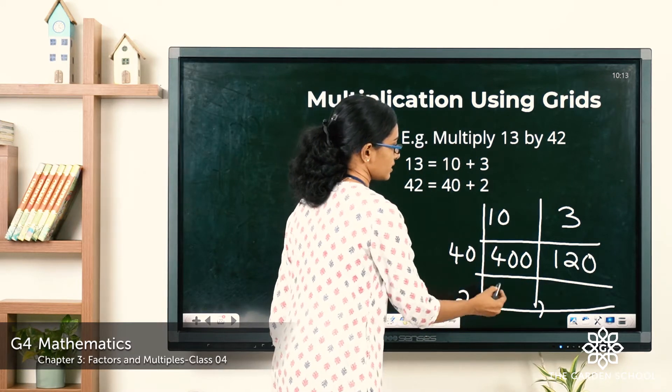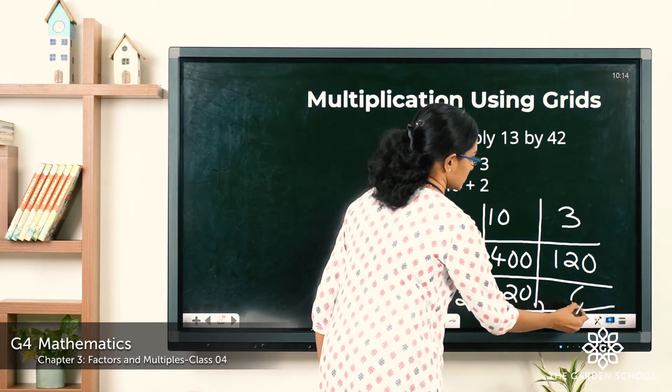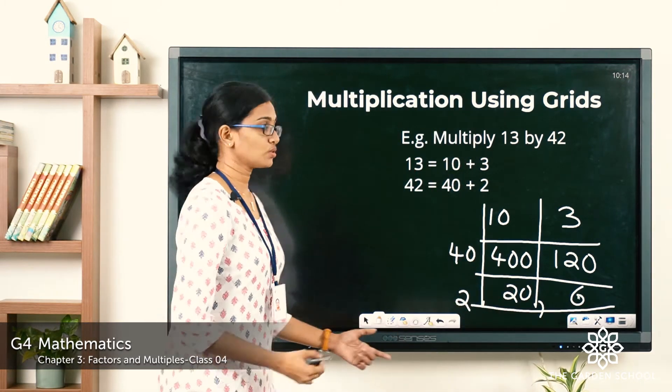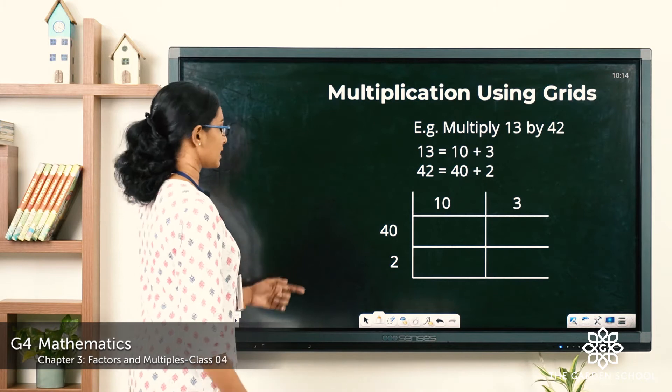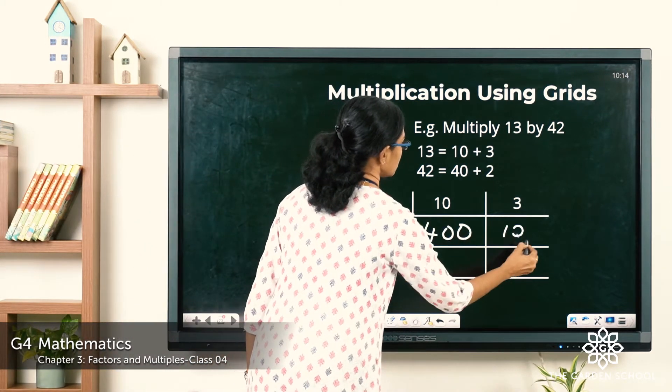Now 2 into 10 is 20. Now 2 into 3 is 6. Now what you have to do? You have to add up all these products to get the final product.